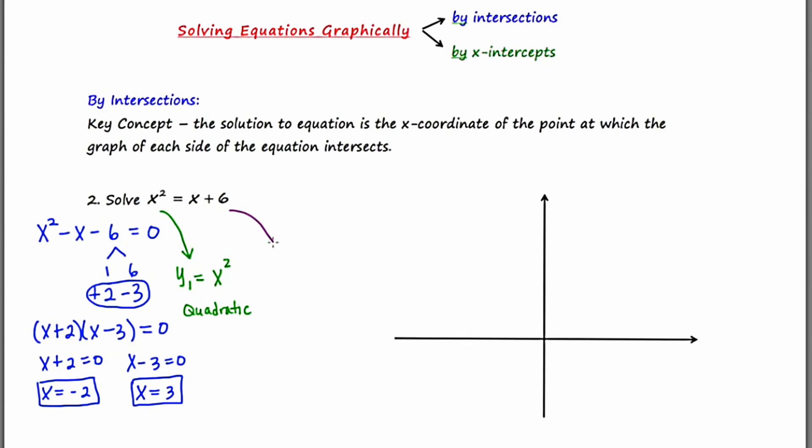And when I go to y two, y sub two is equal to x plus six. Now this happens to be linear. So let's start with the graph of the left side, y equals x squared. Again, it's a quadratic, and this is going to look like a parabola with a vertex at zero, zero.